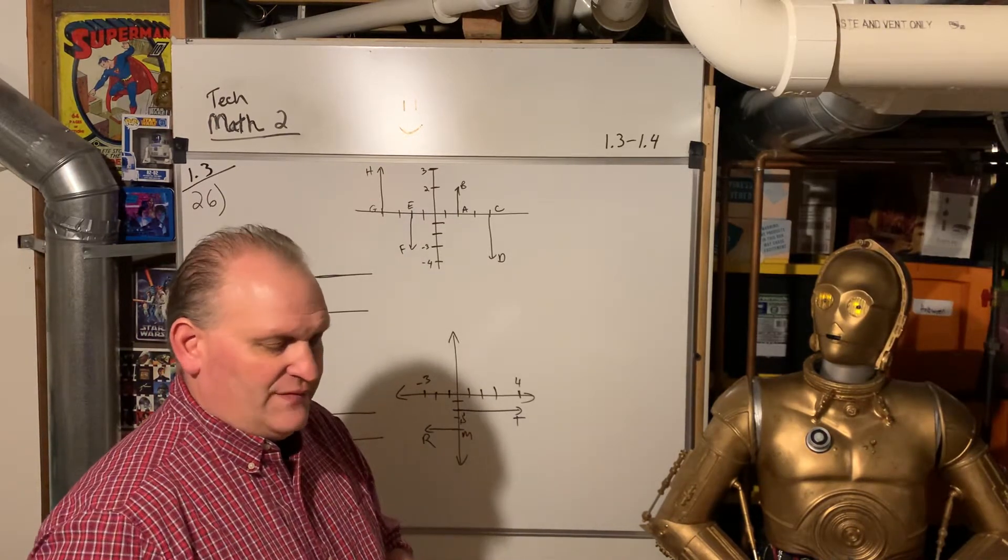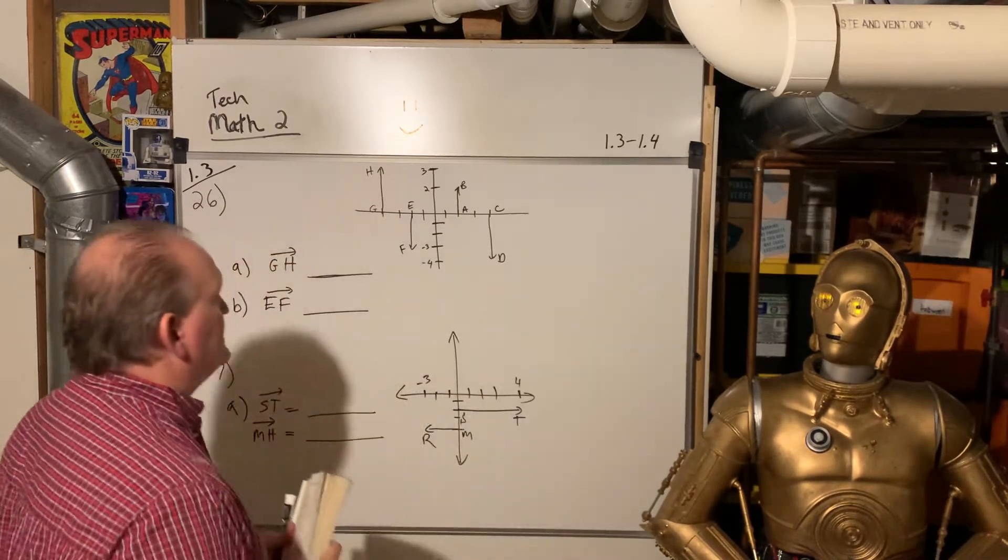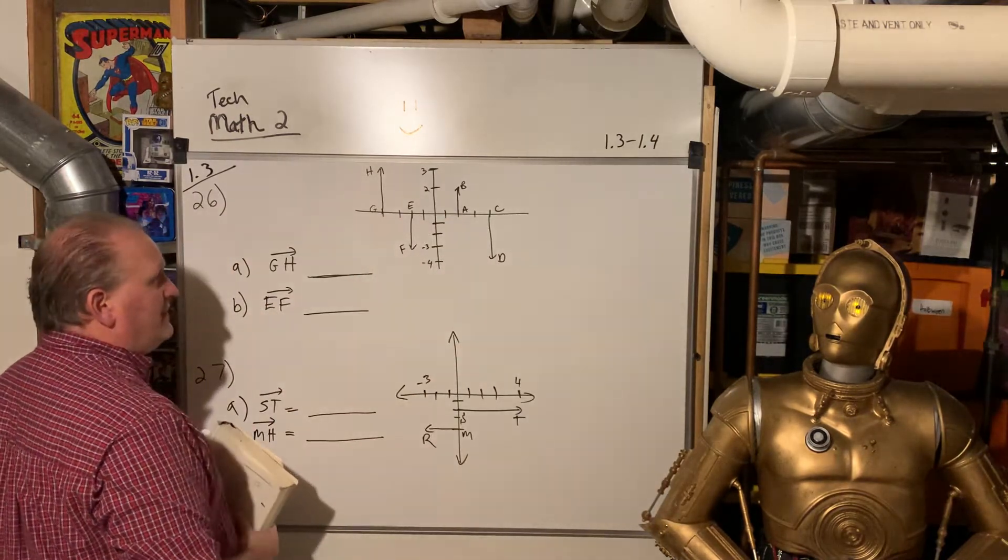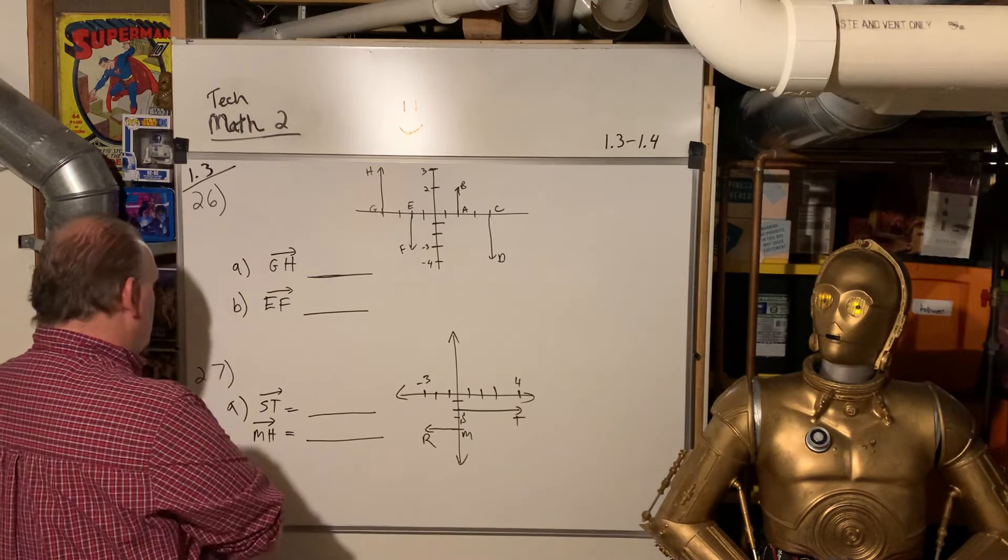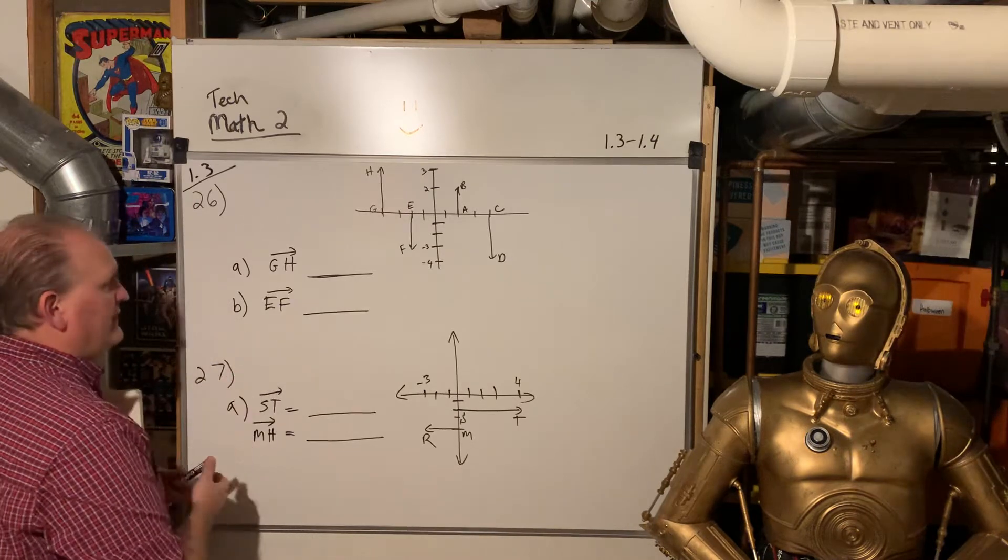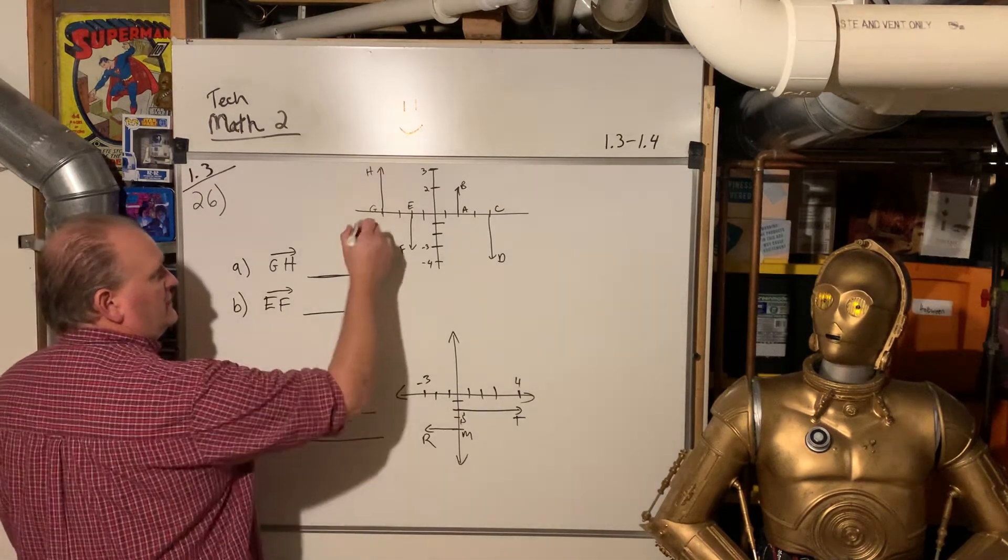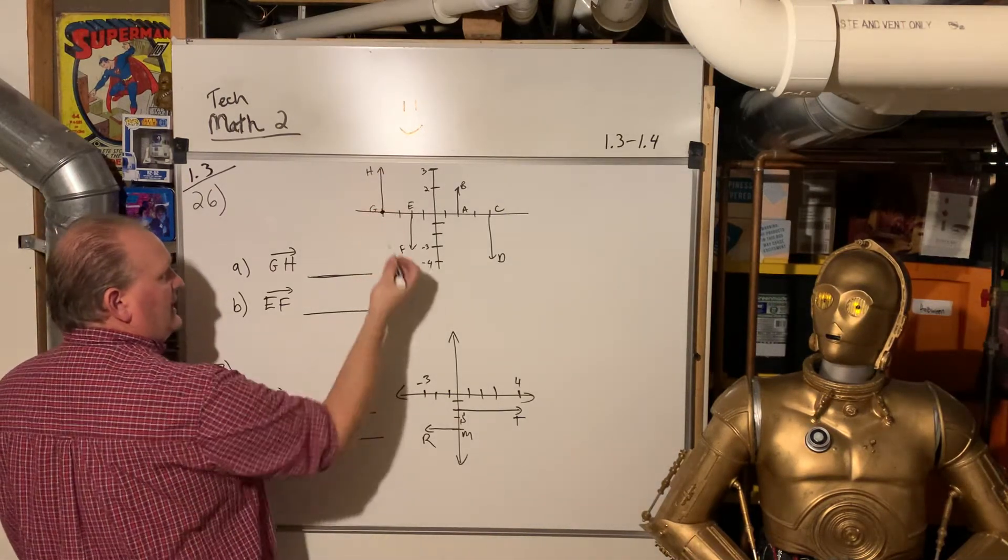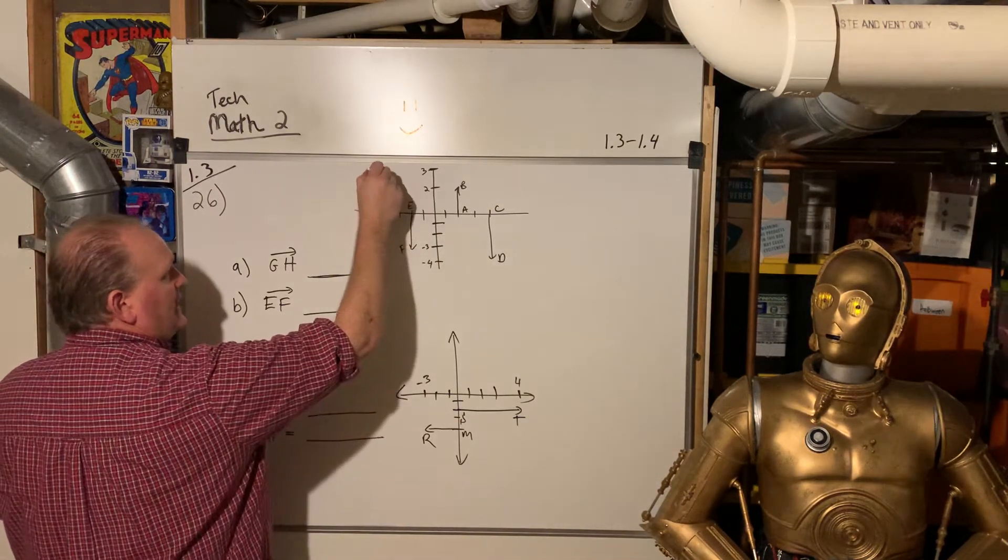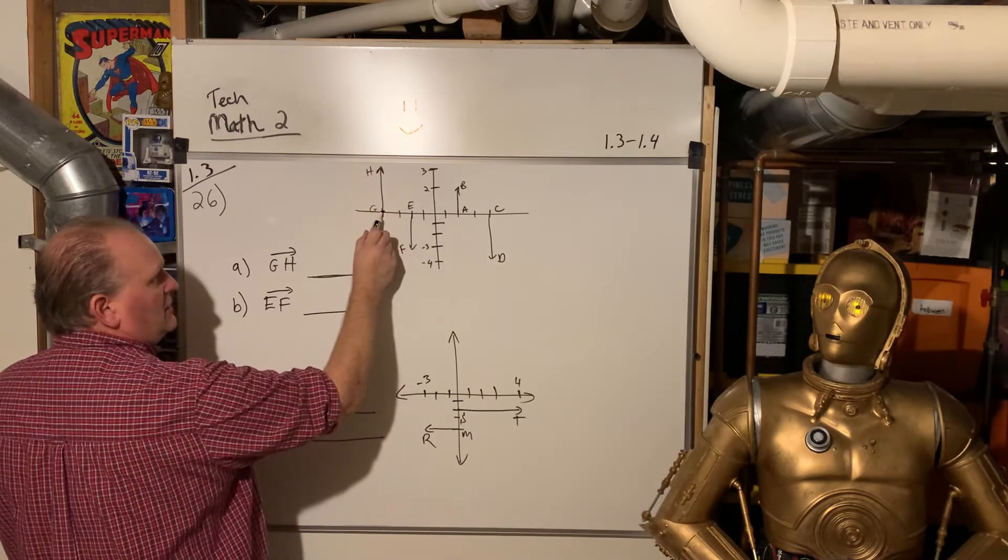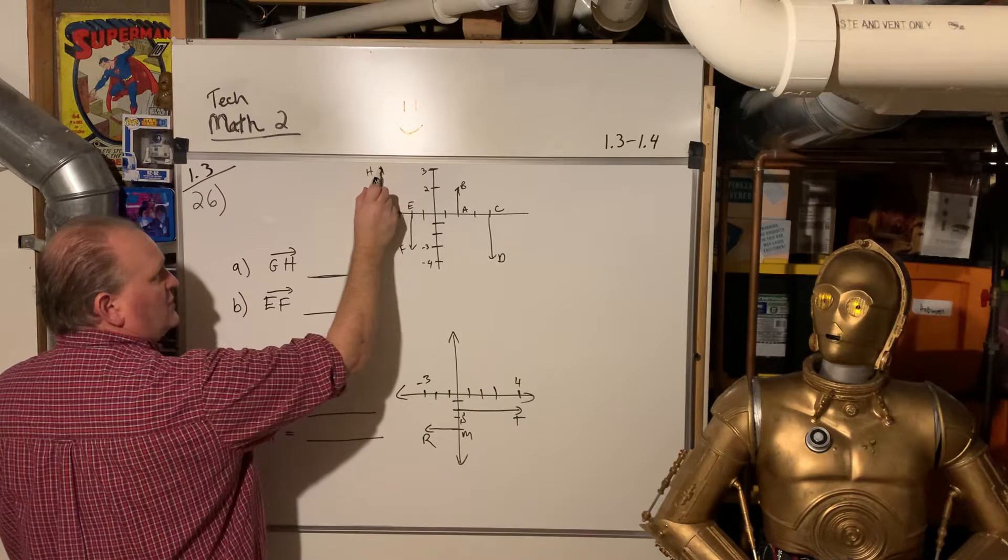They're talking about vectors. Vectors in space. But it's actually vectors on a coordinate plane. And so they've kept it pretty easy with these two examples. On 26 and 27, GH, you start from a vector, is a defined segment, but it's got direction to it. So GH starts at 0, and it goes directly upward to 3.